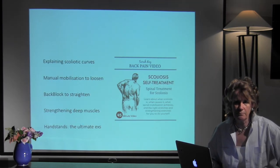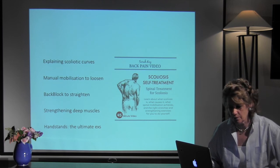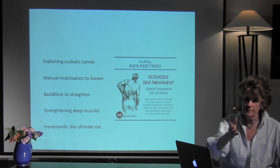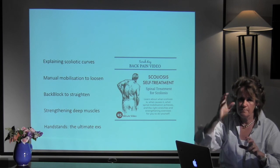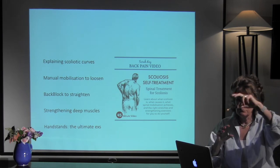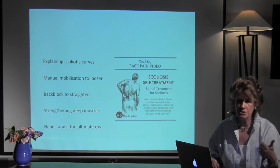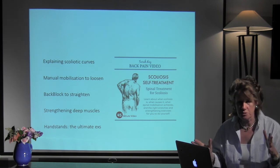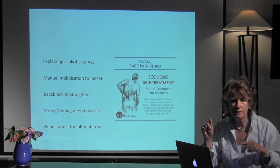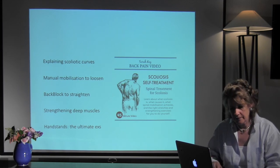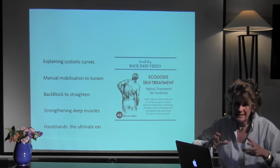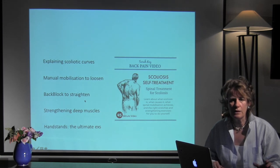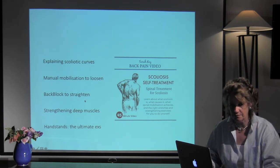Scoliosis is also a very big topic — a lot of people have it. The video explains the curves, how there's a primary and secondary curve going in different directions, about the apices, and how the peak of each curve is always the problem segment. It explains how you can have headaches, pain in your shoulder, pain in your waist, and sciatica — all part of the same syndrome because the spine is bending and creating inflammatory hot spots. It covers strengthening the deep muscles, untwisting, and using the back block in a way that actually pales out the scoliotic curves.